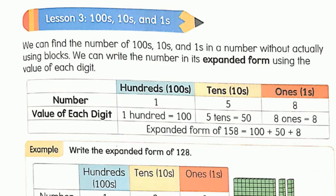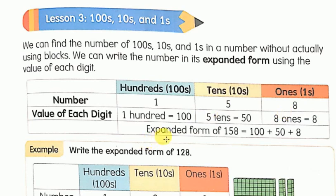Let us take an example of number 158. The number 158 has 1 hundred, 5 tens and 8 ones in it. We have to write the value of each digit: 1, 5 and 8. The value of 1 hundred is 100. The value of 5 tens is 50. And the value of 8 ones is 8. So, the expanded form of 158 is written as 100 plus 50 plus 8.